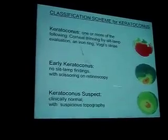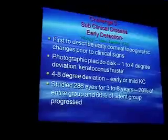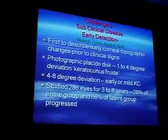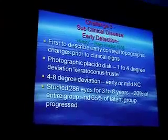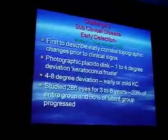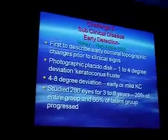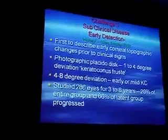If you look at videokeratography, it's a little bit more helpful. Here you can see atypical topography without any clinical signs, typical topography with no clinical signs but just scissoring in retinoscopy, and here is obvious keratoconus. Mark Amsler was the first to talk about early detection of keratoconus and described early topographic changes prior to clinical signs. Using a crude placido disc showing a 1 to 4 degree deviation, he called that keratoconus fruste, and 4 to 8 degree deviation he labeled early or mild keratoconus. He studied 286 eyes for 38 years, and 20% of the entire group but 66% of this early group progressed.